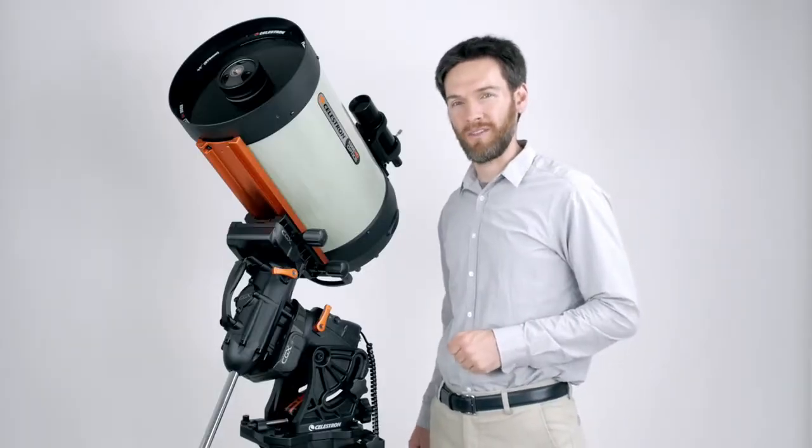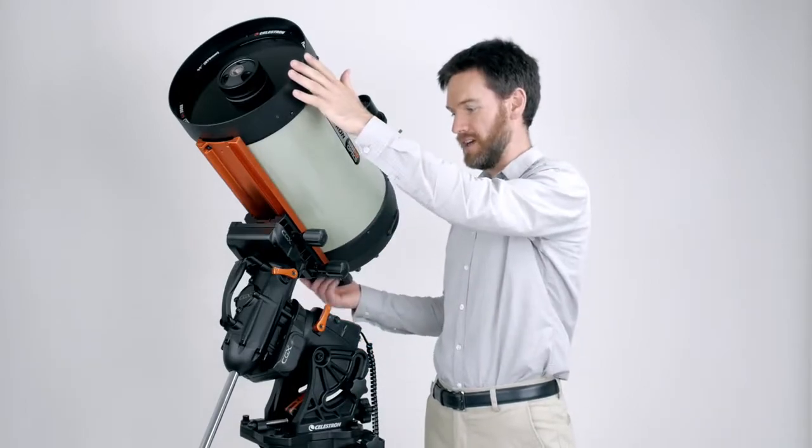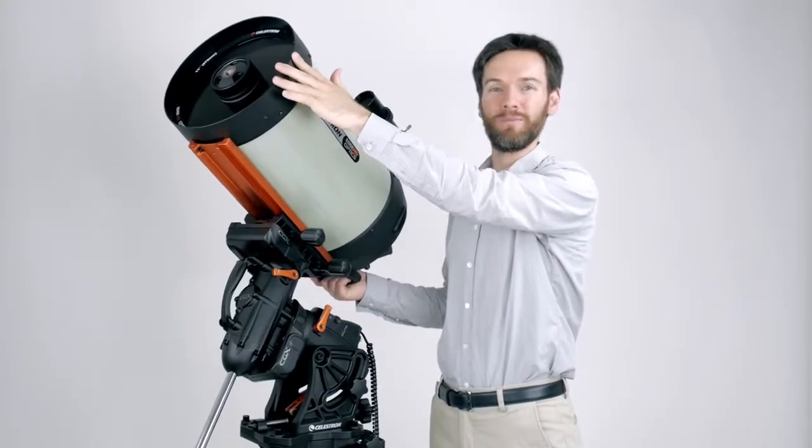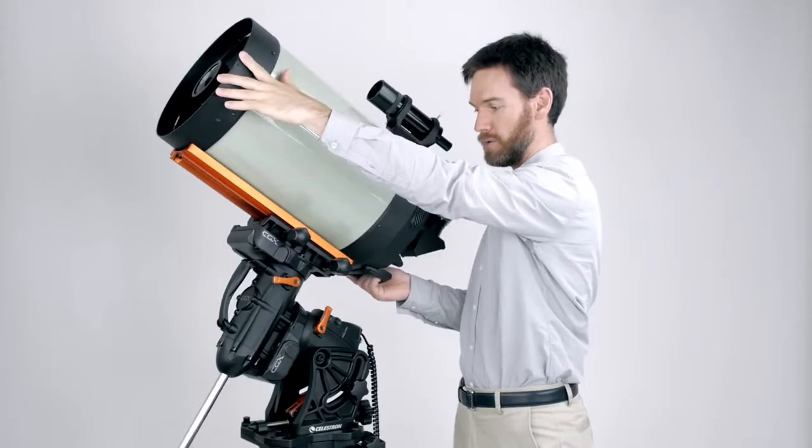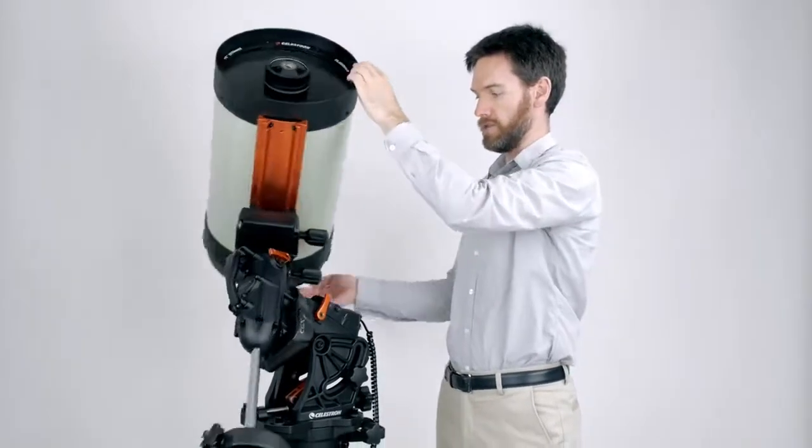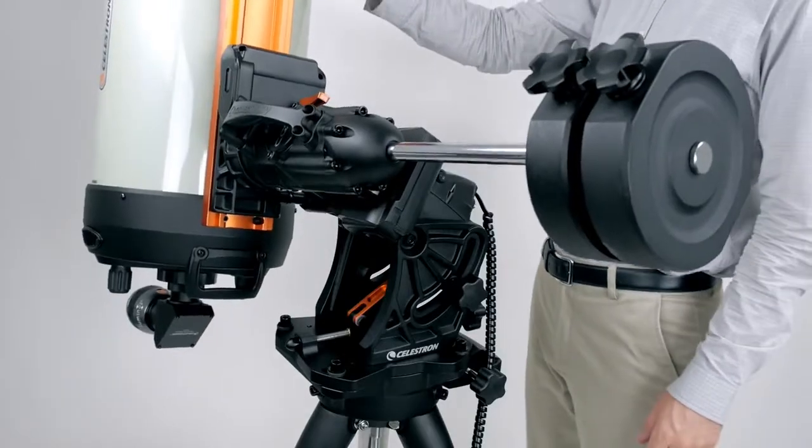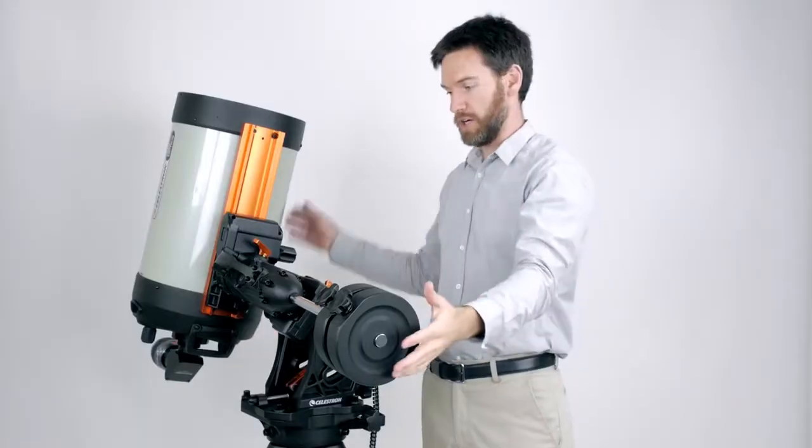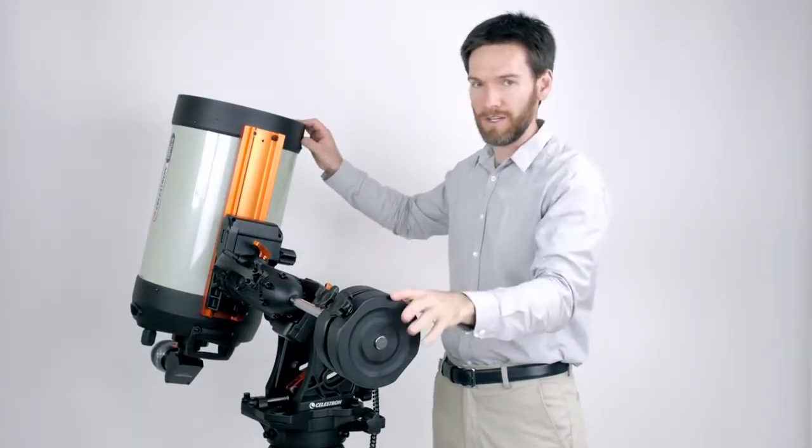For all the backyard observatories out there, you will definitely appreciate that this mount has home and limit switches built in. It will always be able to return to its home position, and it will always know where the slew limits are in the mount. In addition to that, there are actual hard stops in this mount because, as I mentioned, there are internal cables.